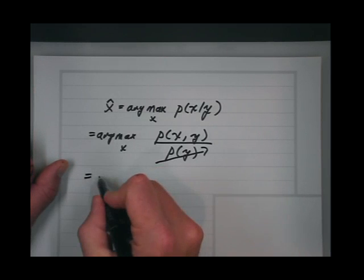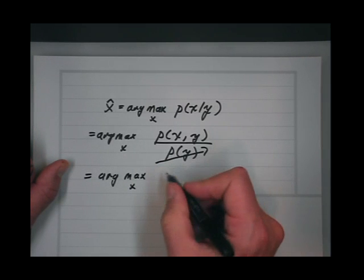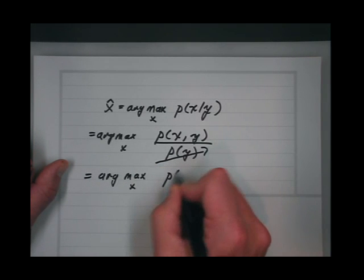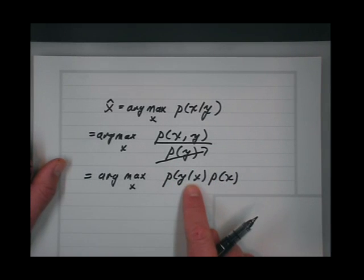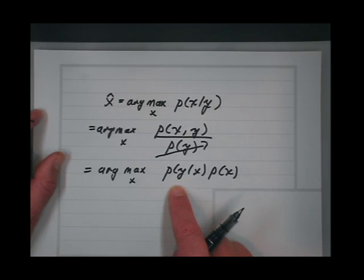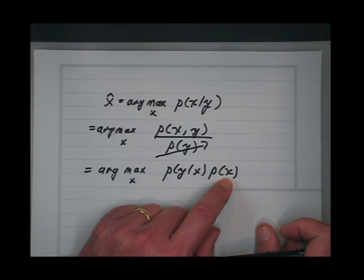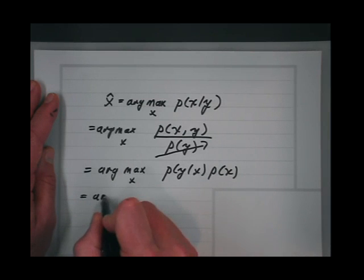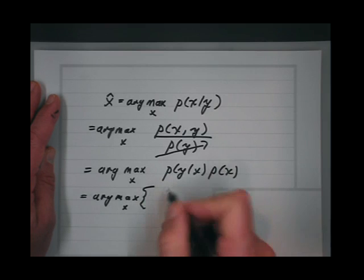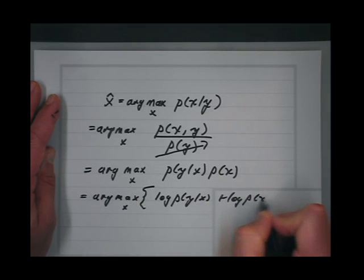Then I can say: this is the arg max over x of p of y given x times p of x. Why do I write it that way? Because I can calculate — for physical reasons — the distribution of y given x. That's my physical instrument. And p of x is the model I've adopted for the data. Then I can take the log of this: log of p of y given x plus log of p of x.